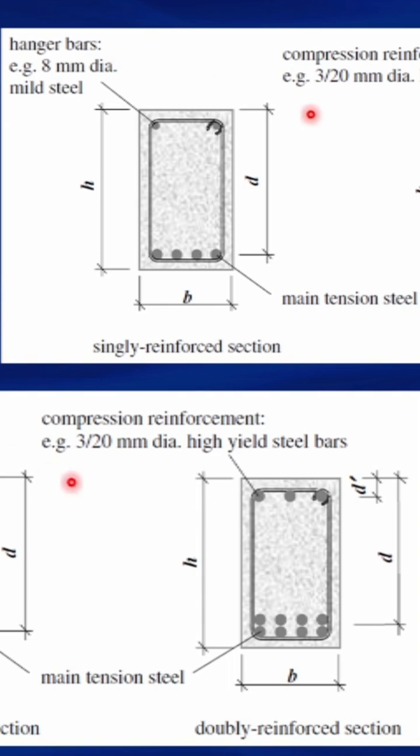But in the case of a double-reinforced section, this is when the beam is subjected to both tension and compression. So in that case,